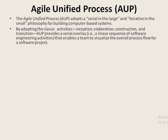By adopting classic activities like inception, elaboration, construction, and transition, AUP provides a serial overlay that enables a team to visualize the overall process flow for the software project. Serial overlay means a linear sequence of software engineering activities — this is what is meant by serial in the large, where the overall process appears as a sequence of activities.